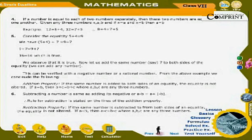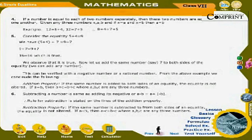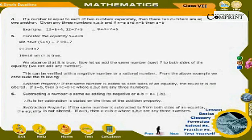5. Consider the equality 5 + 4 = 9. Adding 7 to both sides: 5 + 4 + 7 = 9 + 7, giving 16 = 16, which is true. We can add any number — this can be verified with a negative number or a rational number. From this example we conclude the Addition property: if the same number is added to both sides of an equality, the equality is not altered.